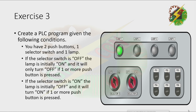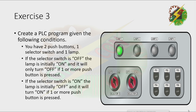With the selector switch off: the lamp is initially on. When I press push button 1, the lamp turns off. When I press push button 2, the lamp turns off also. And when I press both push buttons, the lamp turns off as well. Now let's try to turn on the selector switch.